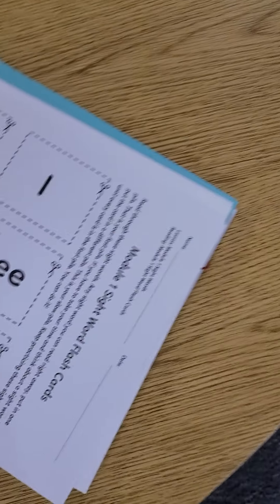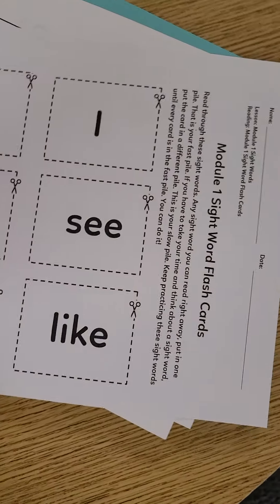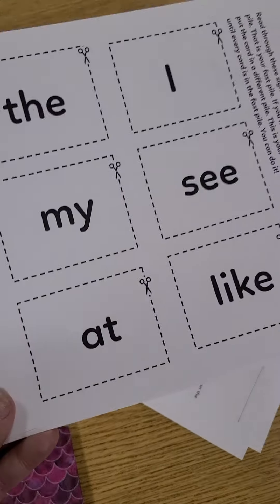The next item here are flashcards for your sight words. I know we gave these to you on regular paper but we put it on cardstock in case those were getting worn out. You could play some games, turn those over, try to name them.